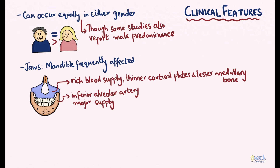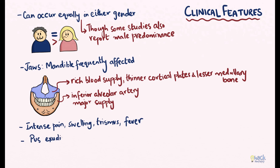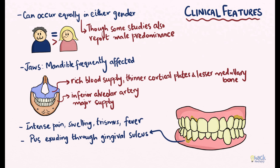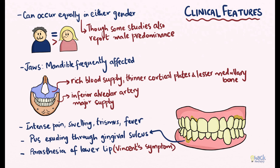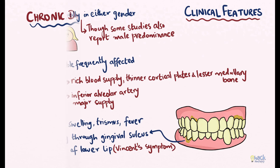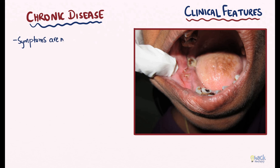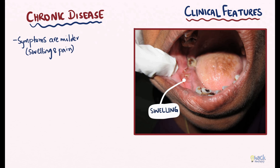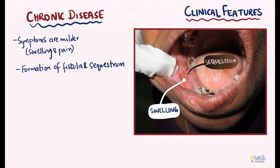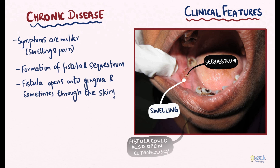Patients with the acute form of the disease may have intense pain, swelling of the jaw, trismus, and a rise in temperature. There may be pus exuding through the gingival sulcus, and patients may have paresthesia of the lower lip due to compression of the inferior alveolar nerve. The symptoms in the chronic form are milder, with pain and swelling being less severe. The chronic disease is characterized by fistula and sequestra formation, and fistula could be mucosal or cutaneous with pus exuding through the skin.